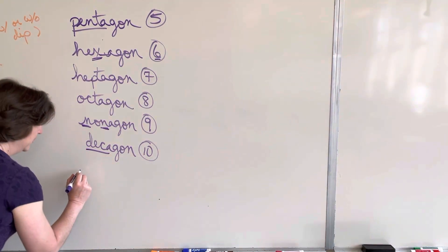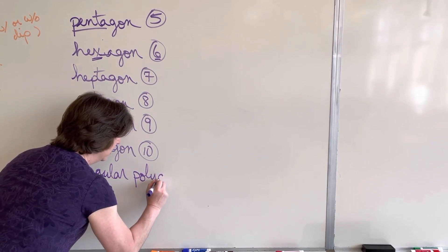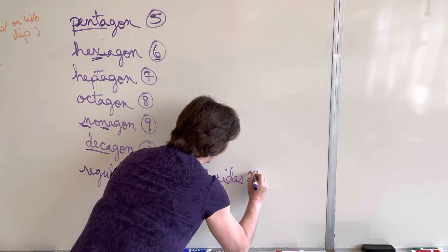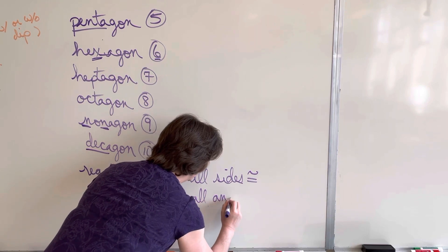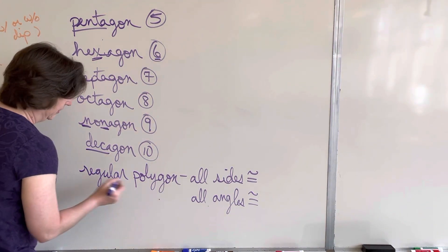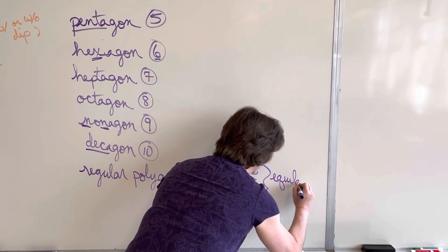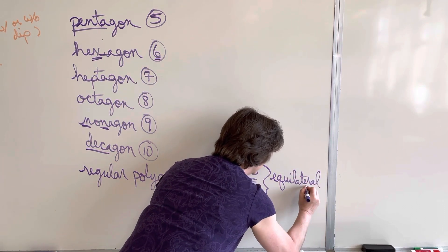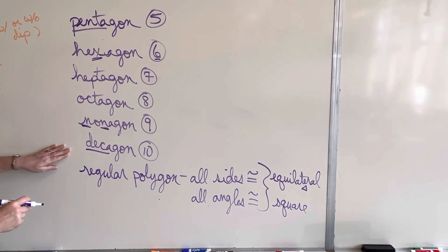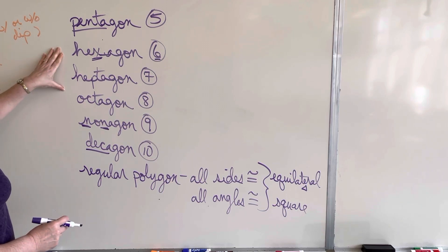The last thing to think about is a regular polygon. A regular polygon means all sides are congruent and all angles are congruent. There were two regular polygons in what we've just looked at: the equilateral triangle and the square. Any of these polygons can also be regular shapes if they have the same angles and the same side measures all the way around.